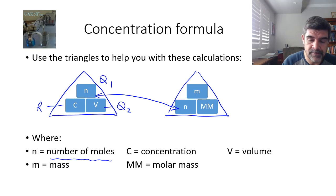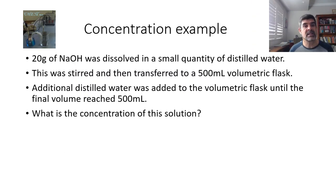But how do they work? Well, in practice, this is the sort of stuff that we're more likely to get. So let's work through one question here, and then I'm sure there'll be plenty more opportunities to practice in class. So we have 20 grams of sodium hydroxide, which we dissolve in a small quantity of distilled water. This was stirred and then transferred to a 500 mL volumetric flask. Additional distilled water was added to the volumetric flask until the final volume reached 500 mL. What is the concentration of this solution?